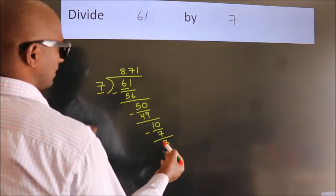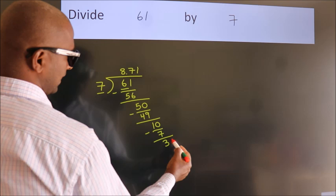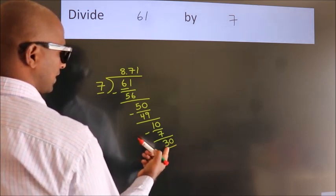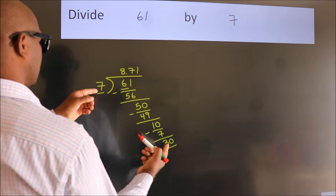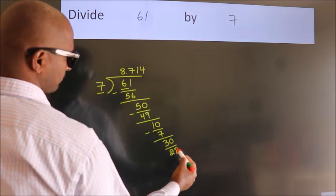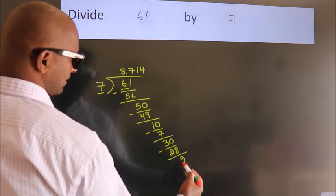After this, we already have the decimal. So, directly take 0. So, 30. A number close to 30 in the 7 table is 7 times 4, 28. Now, we subtract. We get 2.